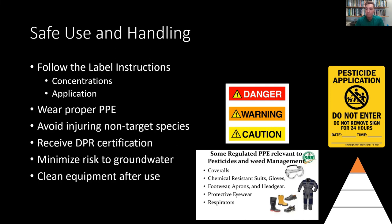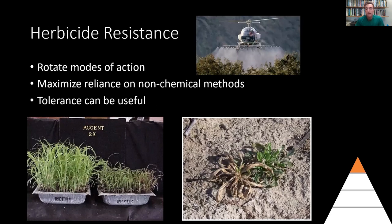There are a few images here. One shows the three types of signal word you can find on any chemical: danger, warning, and caution. Danger is the worst, warning is medium, and caution is the least harmful. If you're selecting chemicals and know nothing else, try to avoid 'danger' and stick with 'caution.' The sign on the right is a requirement — if you're going to apply pesticides as a professional, you need to post it and prevent people from entering the landscape for 24 hours afterwards.